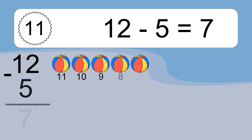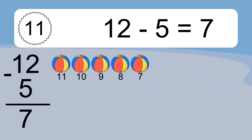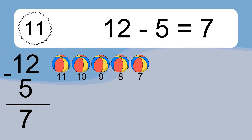12 minus 5 equals what? 12 minus 5 equals 7. Let's count it: 11, 10, 9, 8, 7.